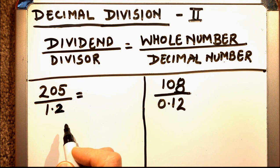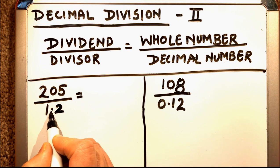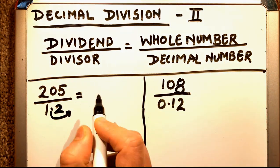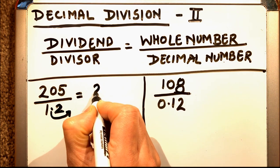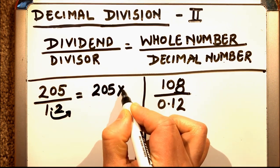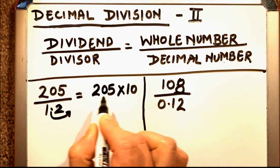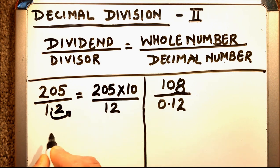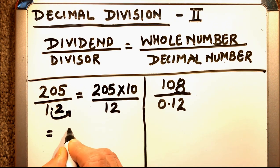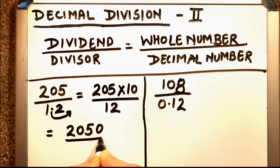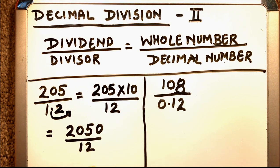So what we'll do first of all is convert this divisor into a whole number. How we can do that is if we move the decimal point to the right hand side by 1, we need to multiply our dividend by 10. So 205 multiplied by 10 will be divided by 12. Our final question will be 2050 divided by 12.